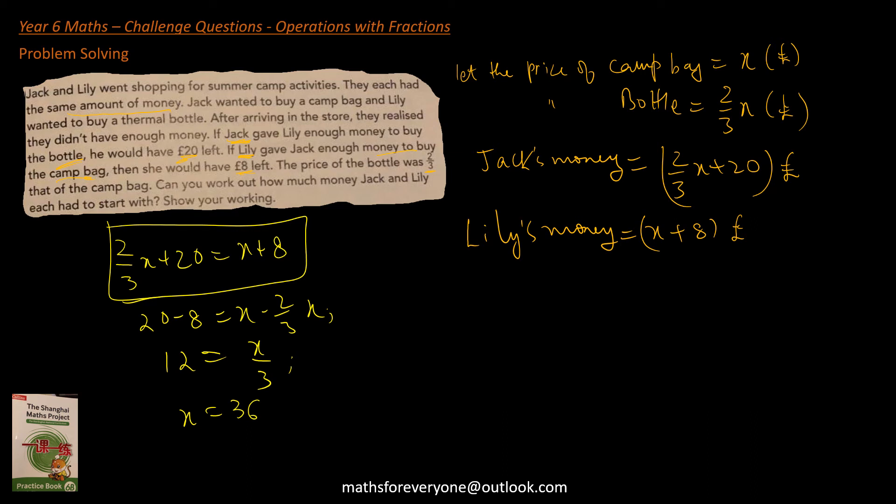So if x equals 36, then if I find either of Jack or Lily's money, the problem is solved. So let me do Lily's money. That equals 44. So that equals pound 44.